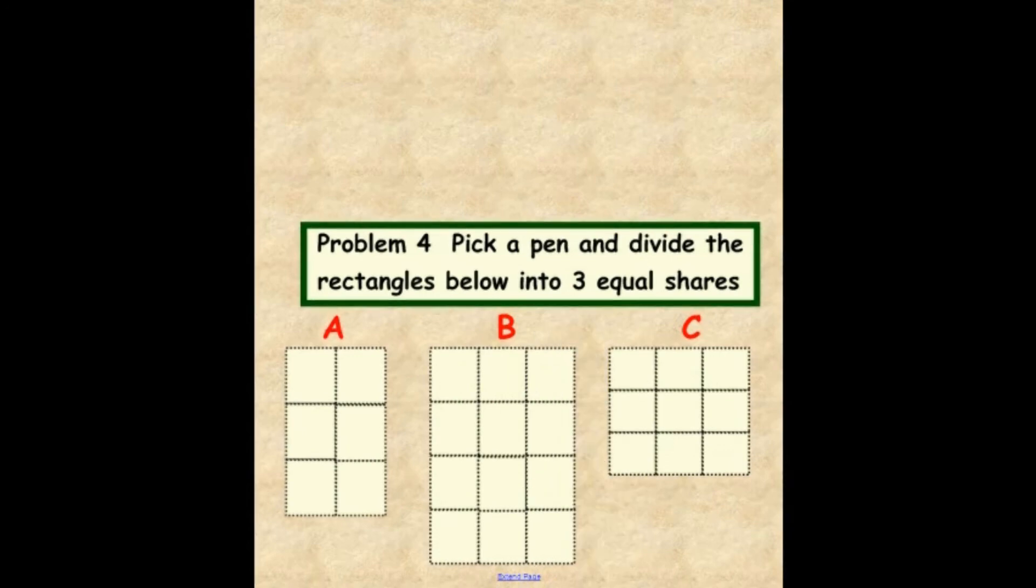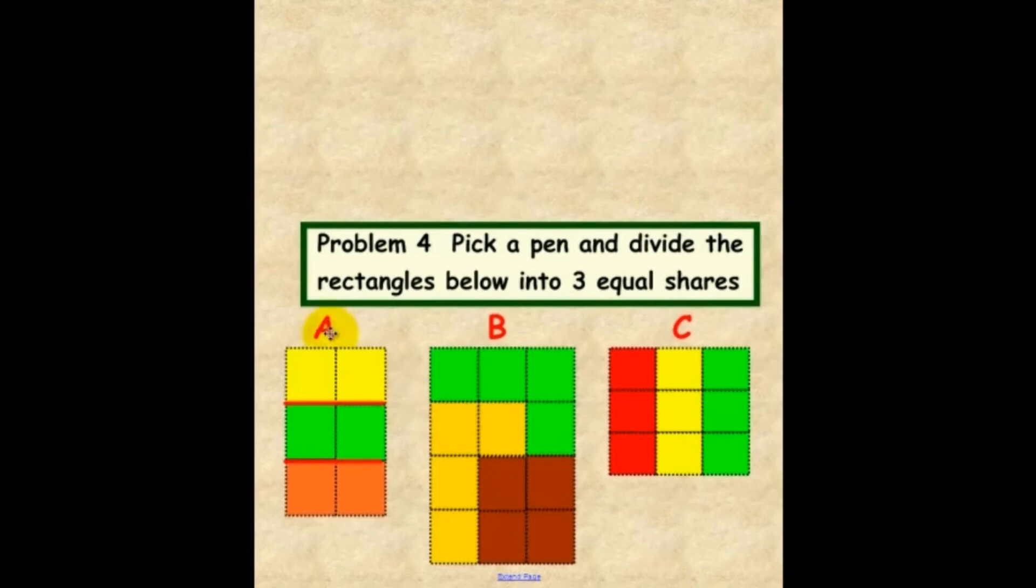Okay, let's see if you have the same answers we have or something similar. You'll notice that in A, we have one, two, and three. And in B, we have one, two, and three. And in C, we have one, two, and three. That was outstanding. Hopefully yours looks something like ours. Okay, I hope you had a lot of fun and thank you for working with us today.